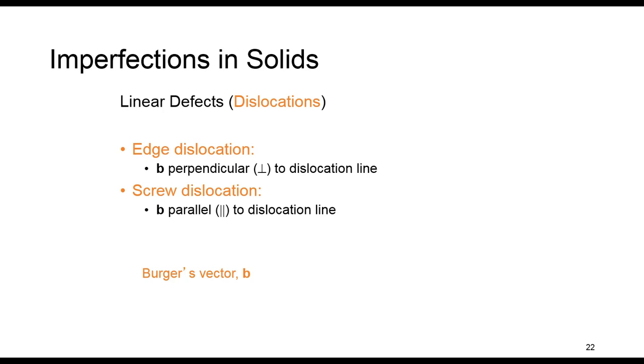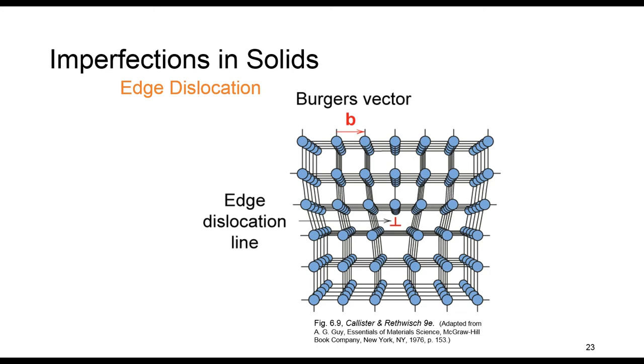In screw dislocation, we have a spiral planar ramp resulting from a shear deformation. And here also, Burger's vector is different from edge dislocation, and here it's parallel to dislocation line. As I said in the previous slide, edge dislocation is when we have one-dimensional defect. This defect is caused by this half plane, as you can see, of atoms, which is inserted here. So what you see, you see this region of the crystal is stretched under tension, and this portion is under compression. This results in one line that we know as edge dislocation.